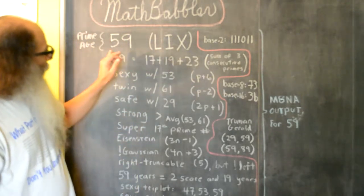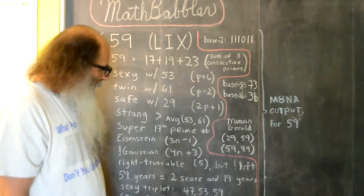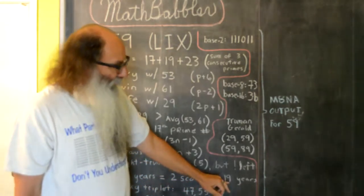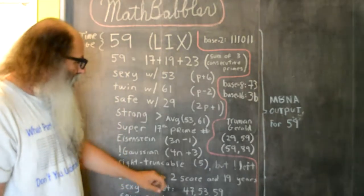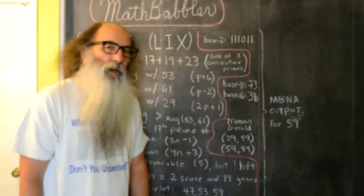And then, since we're talking about 59 years of age, we could write that as 2 score 19 years, and both the numbers 2 and 19 are prime numbers.